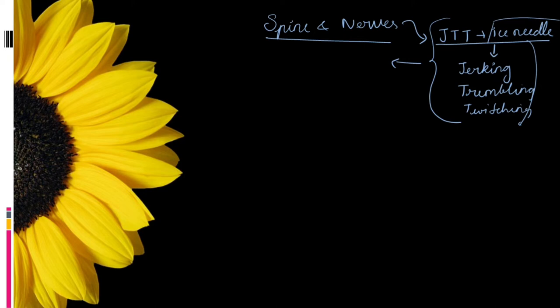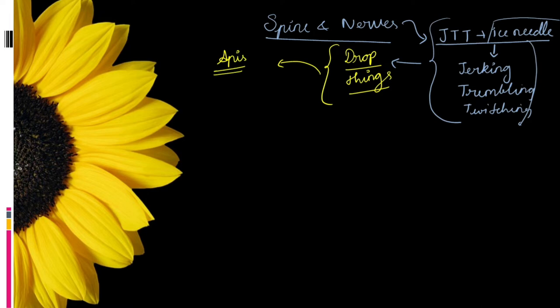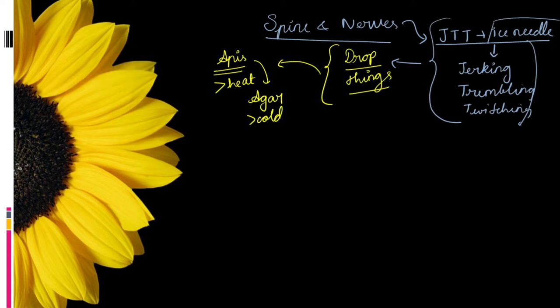Because of jerking, twitching, and trembling, Babu tends to drop things from his hands. Agaricus can be compared with Apis Mellifica — Apis has more intolerance towards heat, while Agaricus has problems with cold, not heat. This is an easy differentiating point. The JTT and ice needle pricking sensation can be seen all over the body in general.